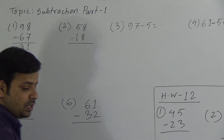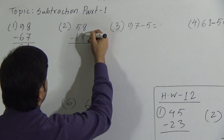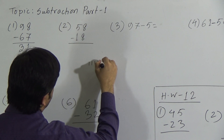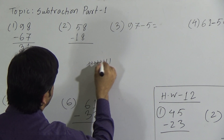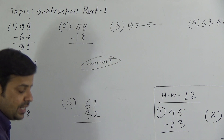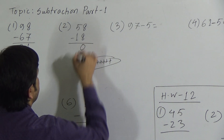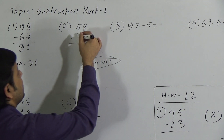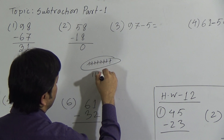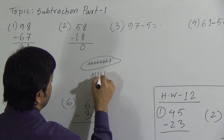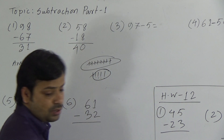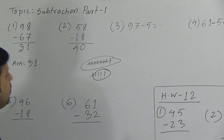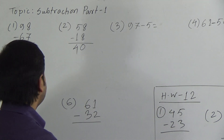Now question 2. Similarly, we start from the unit place. We subtract 8 from 8: 1, 2, 3, 4, 5, 6, 7, 8 — nothing remaining. When both digits are the same, we write 0. Now subtract 1 from 5: consider 5 sticks — 1, 2, 3, 4, 5 — take 1 away, 4 sticks remain. So the tens digit is 4. The answer to the second question is 40.